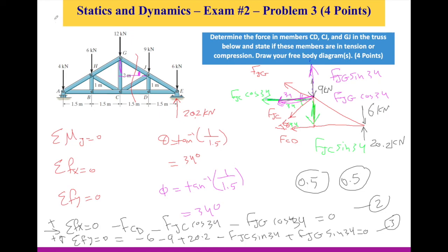If you do the analysis correctly, your FCD, let me write this here, FCD is going to be 21.3 kilonewtons. And since it's going to be positive, so you are pulling on the joint, you're pulling on this joint out. So that's going to be tension.